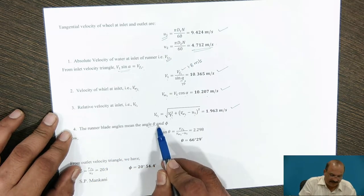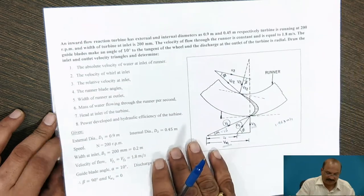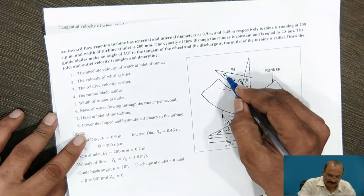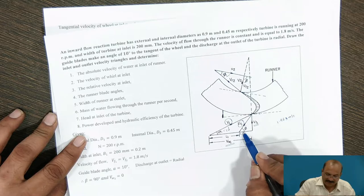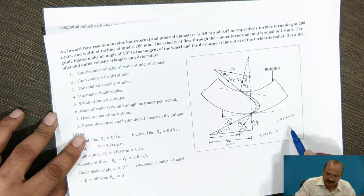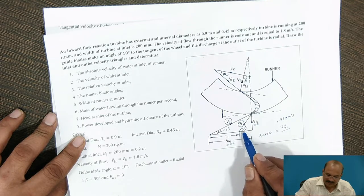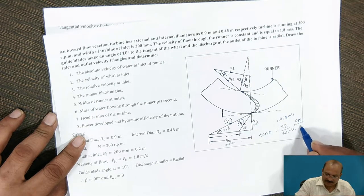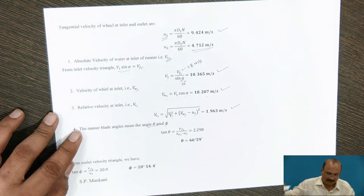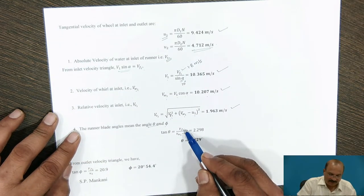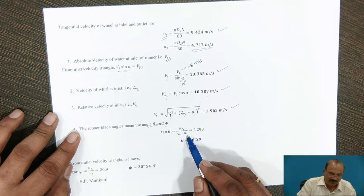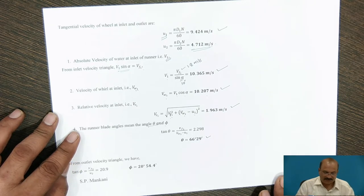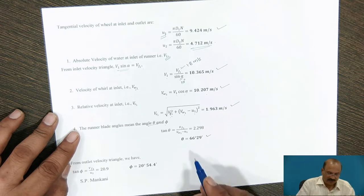For the runner blade angles, theta is the inlet blade angle and phi is the outlet blade angle as shown in the velocity triangle. Tan(theta) = Vf1 / (Vw1 − U1). Substituting Vf1 = 1.8, Vw1 = 10.207, and U1 = 9.424, we get theta = 66 degrees 29 minutes.